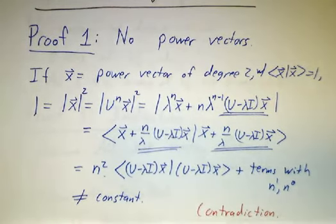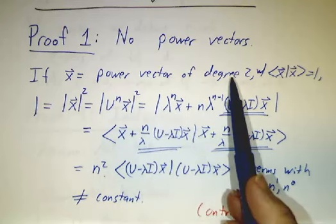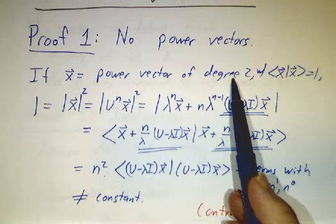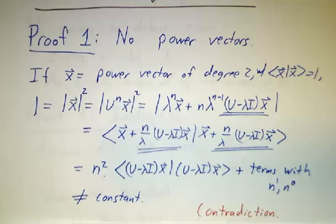Any polynomial that has an n squared in it is not going to be a constant. That's a contradiction. So you can never have a power vector of degree 2 that's not an eigenvector and therefore, it must be diagonalizable. Same idea as for Hermitian matrices.